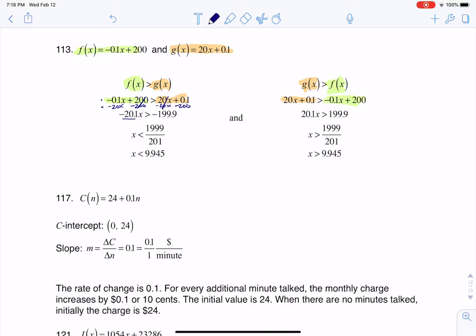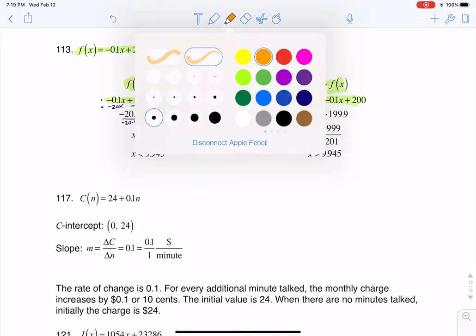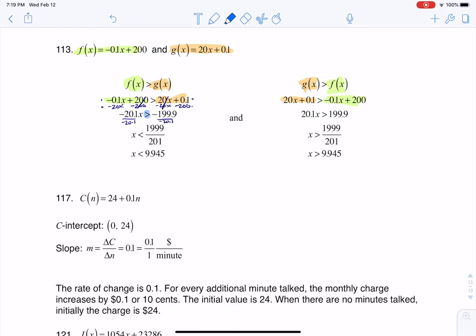And when you do 0.1 minus 200, that gets you to negative 199.9. And then to solve for x, you want to divide both sides by negative 20.1. But keep in mind, when you do that, you've got to change the direction of the inequality because I'm dividing by a negative number. So that's why you see me moving to less than.